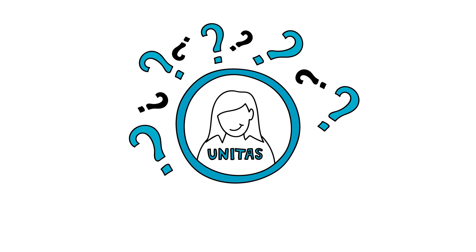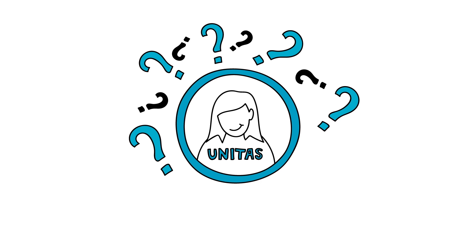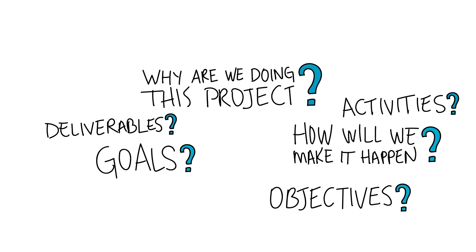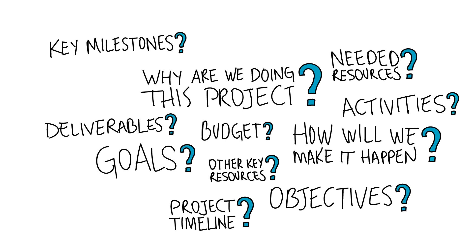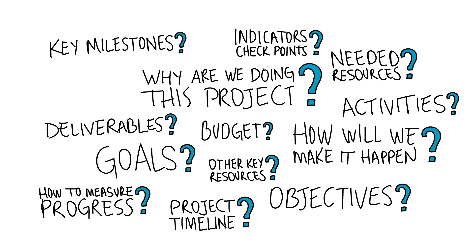Amira, the project manager at UNITAS, is using the implementation plan to provide answers to questions like: Why are we doing this project? What are the goals and objectives? How will we make it happen? What activities are involved? What are the deliverables? When are the key milestones? What's the project timeline? What resources do we need? What's the budget? Are there other key resources needed to succeed, and how do we measure progress? Are there indicators and checkpoints in place?